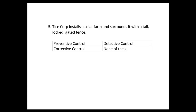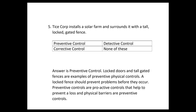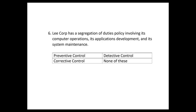Number five: Tice Corp installs a solar farm and surrounds it with a tall locked gated fence — that's a classic example of a preventive control. Locked doors and tall gated fences are examples of preventive physical controls. A locked fence prevents problems before they occur; nobody can get into that solar farm without the key to the gate. Physical barrier controls will always be preventive controls.